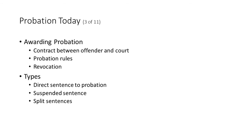A split sentence is just like it sounds — the court sentences a person to partly jail and partly probation. In a split sentence it is local time, not prison time, so it's a jail sentence. For example: six months in jail followed by five years probation — that's a typical New York felony split sentence.